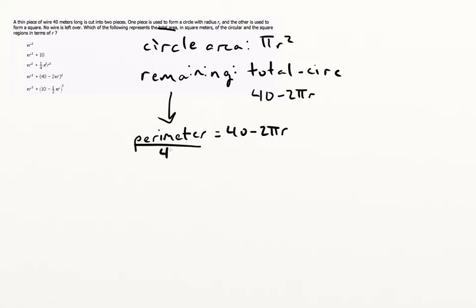But then if we divide the perimeter by 4, because a square has 4 sides, then that's going to give us the side of the square. So that gives us 10 minus 1 half pi r. And of course, if we want the area of the square region, that's just going to be the side of the square, squared, to get the area square.